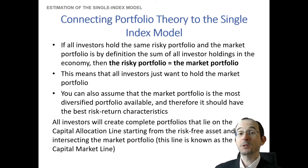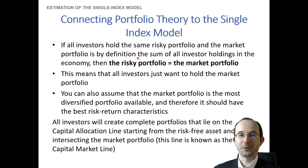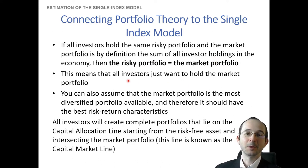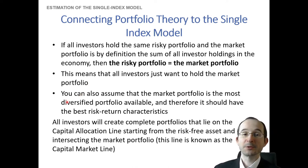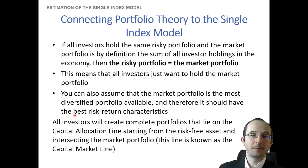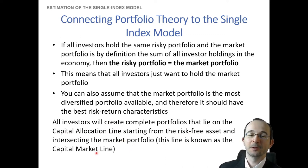Now, how does this actually relate to the single index model? Well, if everybody holds the same risky portfolio, and the market portfolio is by definition the sum of everybody's holdings, then those two things are equal — the risky portfolio that everybody holds must be the market portfolio. Therefore, everybody is exposed to the market portfolio. It's the most diversified portfolio because it's literally the broadest portfolio you could create, so it has the smallest firm-specific risk. That means everybody will essentially create their portfolios on a capital allocation line connecting the risk-free asset and the market portfolio — in other words, the capital market line.